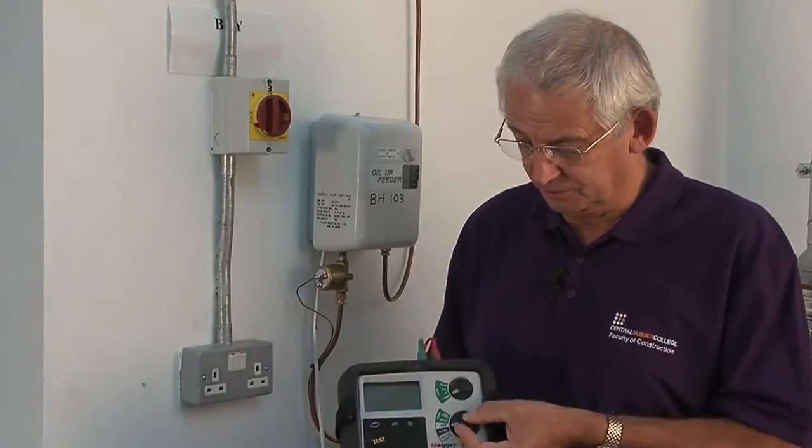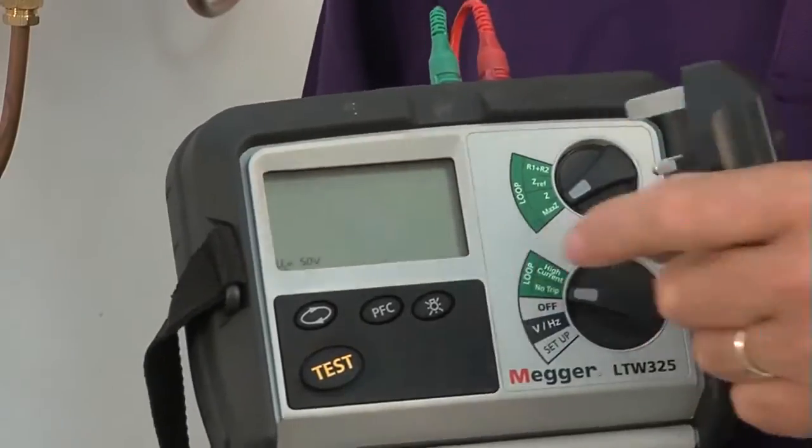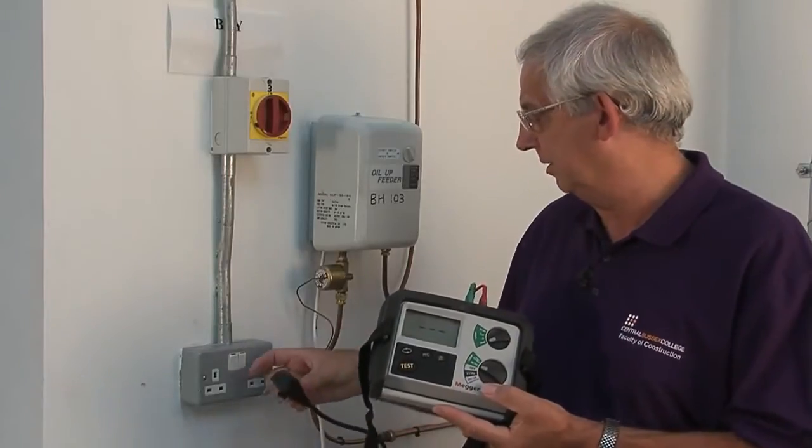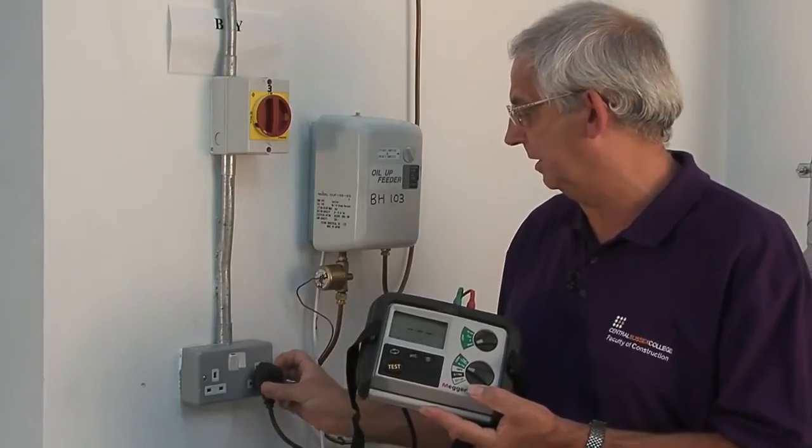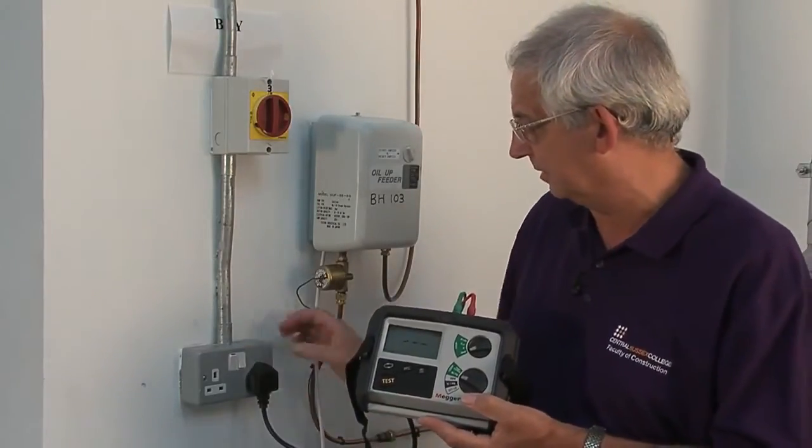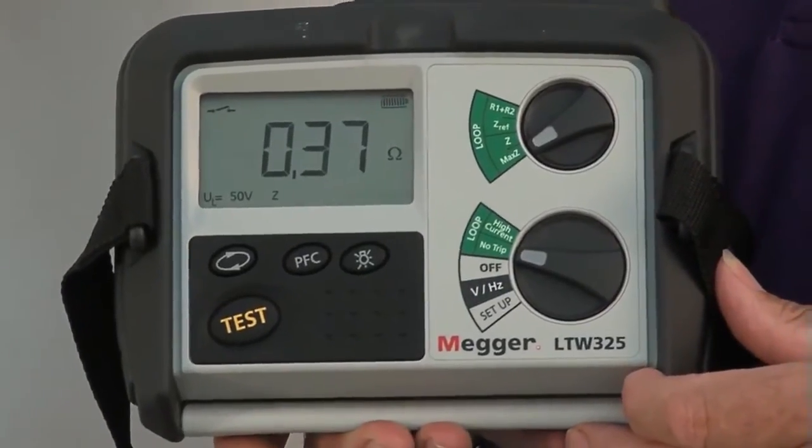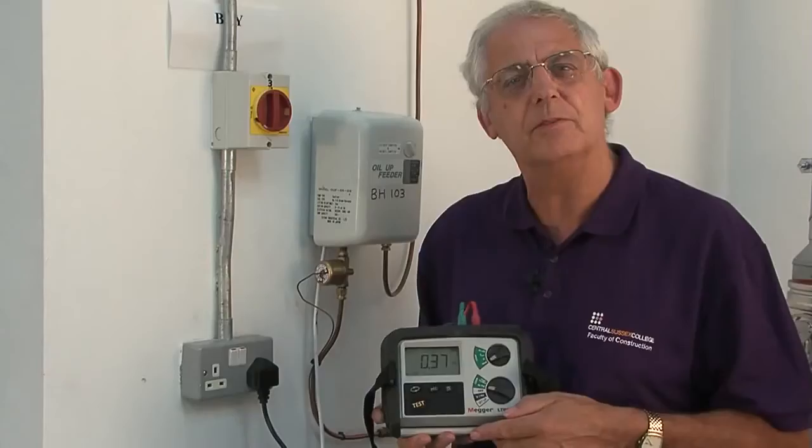This is one of those instruments, so I set it to no trip. And then all I need to do is a very simple procedure: plug the instrument into the socket, switch it on. Now I've got the result, which is 0.37 of an ohm.